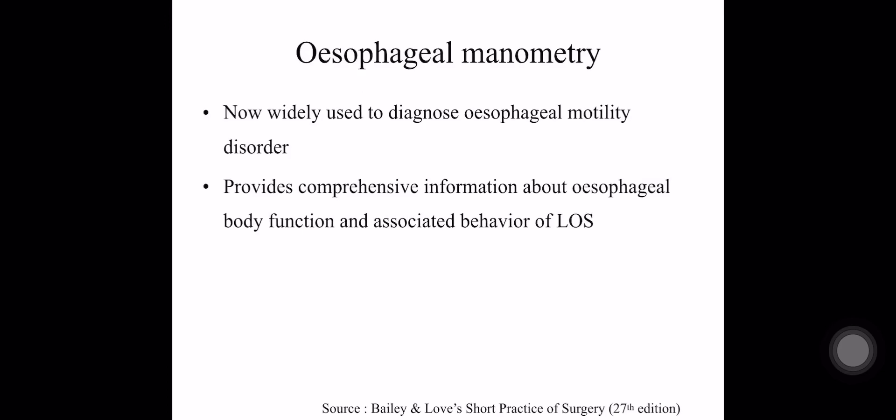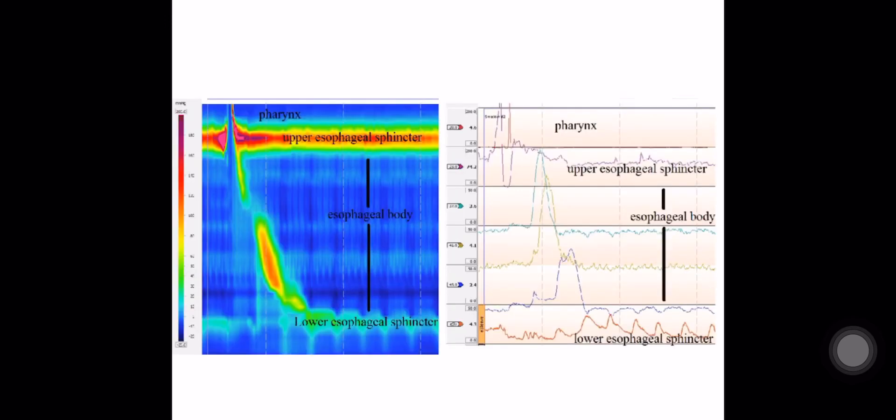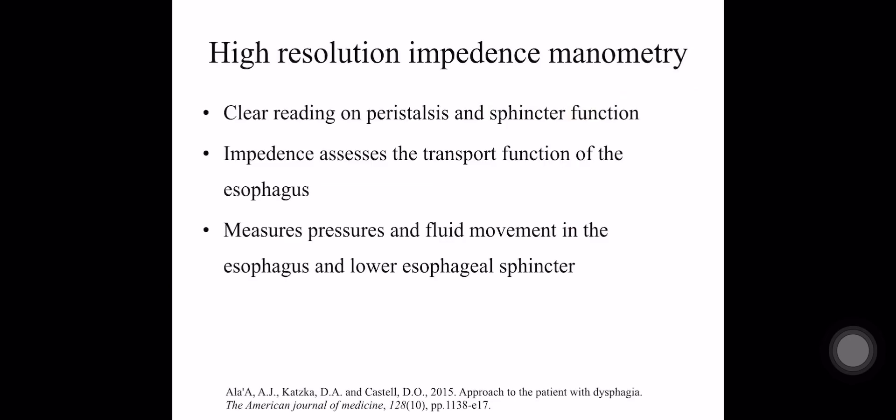The next investigation is esophageal manometry. It is now widely used to diagnose esophageal motility disorders. It provides comprehensive information about esophageal body function and the associated behavior of the lower esophageal sphincter. The next one is high-resolution impedance manometry. It gives a clear recording of peristalsis and sphincter function. Impedance assesses the transport function of the esophagus and can also measure pressure and fluid movement in the esophagus and lower esophageal sphincter.